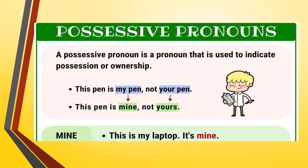Coming to possessive pronouns. Possessive — from the word itself, the meaning is possession or ownership. When someone owns something, it is in their possession. So we use possessive pronouns to show possession or ownership. For example, instead of saying 'this pen is my pen, not your pen,' we can easily say 'this pen is mine, not yours.' 'This is my laptop, it's mine.' Similarly, all the different personal pronouns have a possessive pronoun — hers, theirs, his, yours, mine, ours. These are the different possessive pronouns that show possession or ownership.